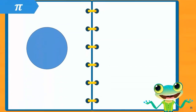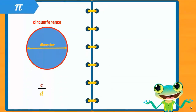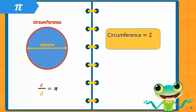So now we have learned that the circumference divided by the diameter of a circle is always equal to pi. We know that the circumference of a circle is equal to 2πr, where r is the radius. We also know that the diameter is equal to 2r. So if we group the 2 and the r together, we get circumference is equal to πd.